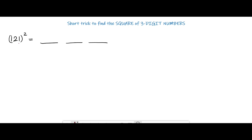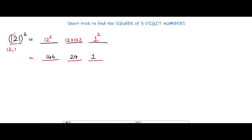For a three-digit number, we take the unit digit as a single number and make pairs of the remaining two numbers. So for 121, this 1 is one pair and 12 is another pair. We again repeat the same process: in the last space we calculate the square of 1, in the middle one we multiply 12 into 1 into 2, and in the first one we calculate the square of 12.